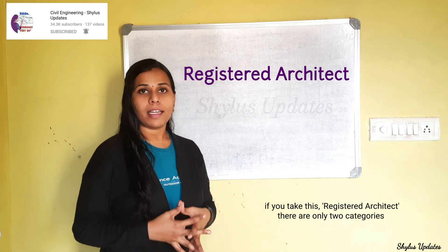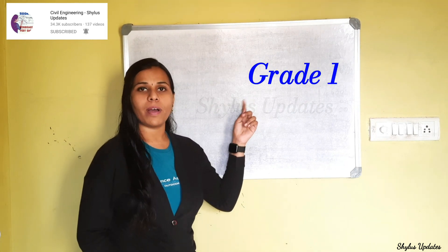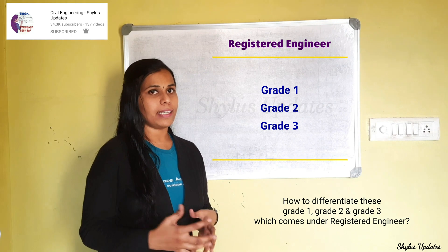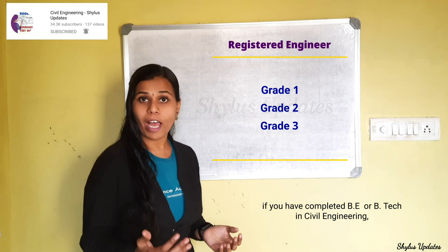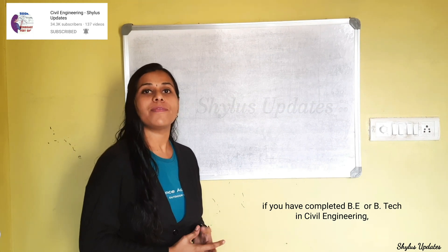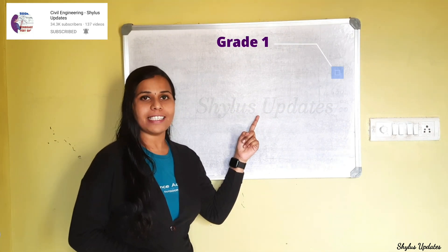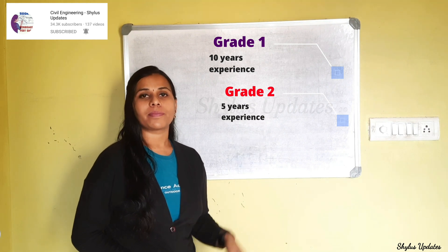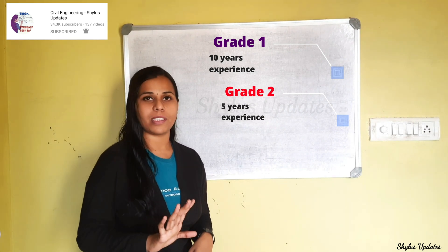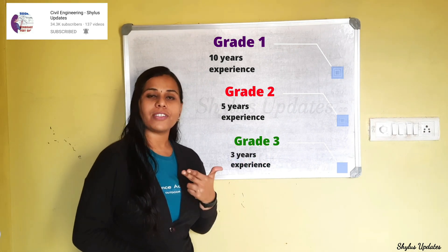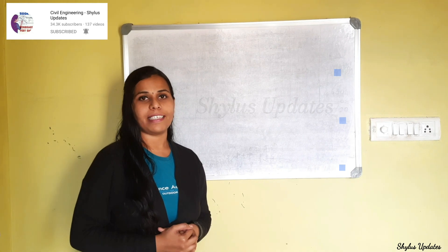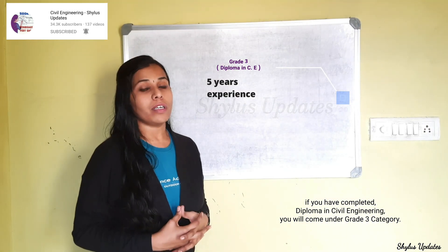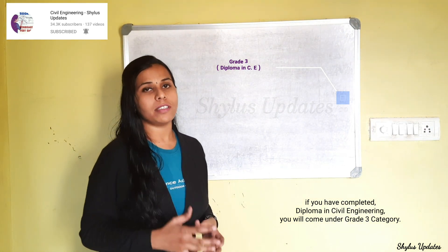For Registered Engineer grades: if you have completed BE or BTech in civil engineering, Grade 1 requires 10 years of experience in the construction field, Grade 2 requires 5 years, and Grade 3 requires 3 years. If you have completed a diploma in civil engineering, you will fall under the Grade 3 category, but diploma candidates require 5 years of experience.